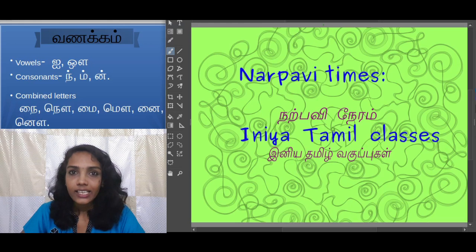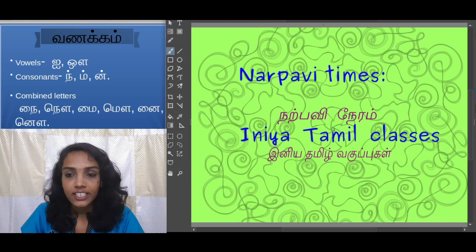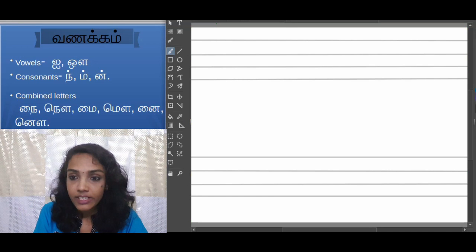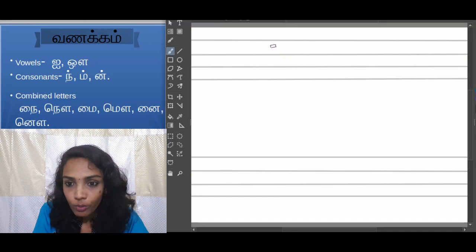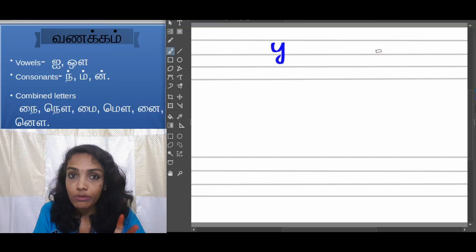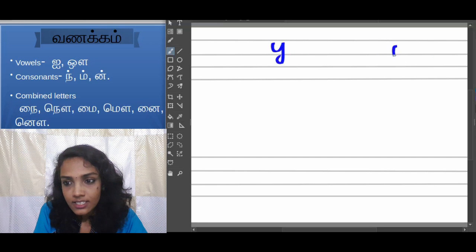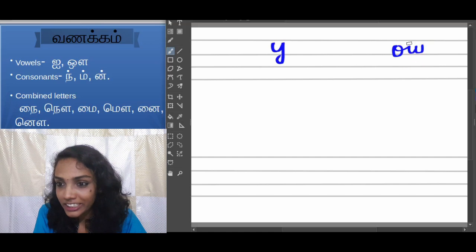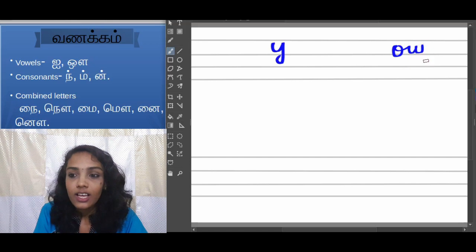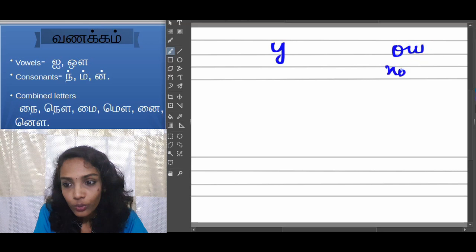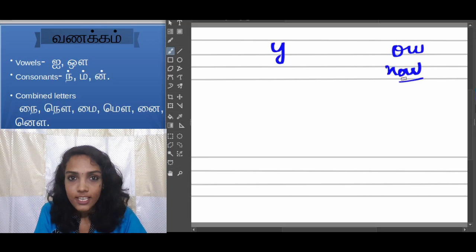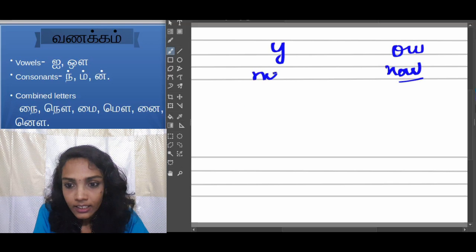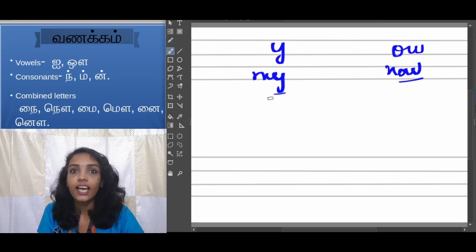Today's vowels are I and OW. Let us start writing. Our first vowel is I sounded and our second vowel is OW sounded. I am writing this like Tamil yah but this is OW as in NOW. OW sounds as in NOW and I sounds as in MY.